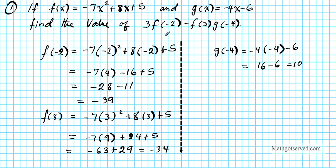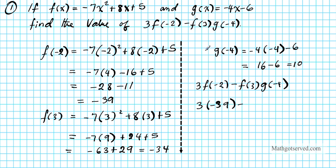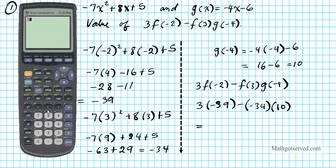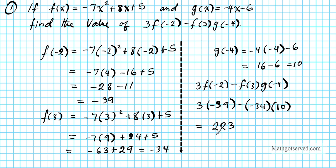Now that we have the value of these three functions evaluated at different points, we're going to input everything into the original expression: 3 times f of negative 2 minus f of 3 times g of negative 4. So we have 3 multiplied by negative 39, minus negative 34 times 10. Using our calculators, 3 times negative 39 minus negative 34 times 10 gives us a final result of 223.